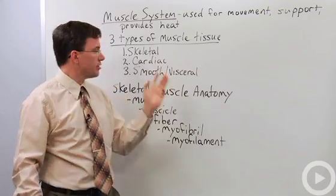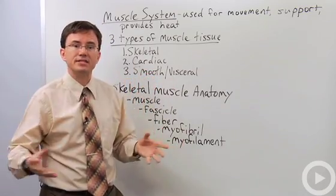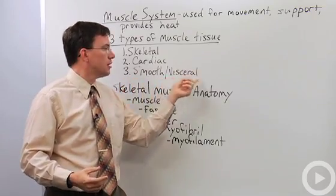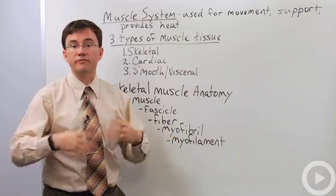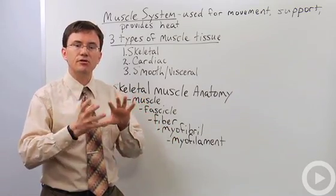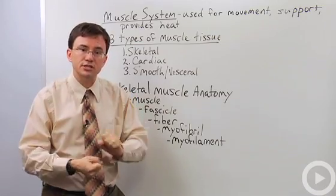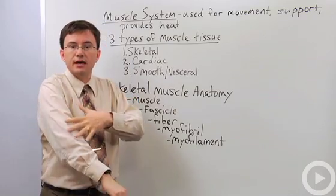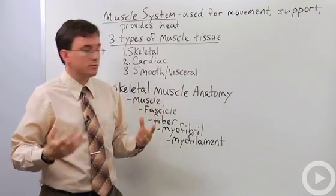Smooth or visceral muscles are given the name 'smooth' because they don't have that striped appearance — the striations. Many are switching to the term 'visceral muscles' because they line your viscera, your guts. These non-striated muscles are involved in moving food through your digestive system, adjusting the diameter of your arteries and veins, and helping make your hairs stand up when you're scared or cold.